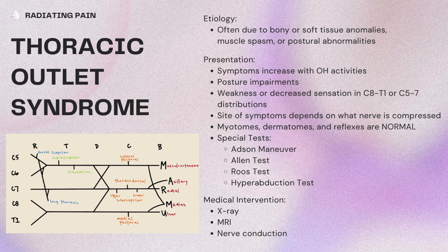Special tests are the Adson maneuver, Allen test, Roos test, and hyperabduction test. Medical intervention includes x-rays to assess for bony morphology and degenerative changes, MRI to identify soft tissue abnormalities or nerve root pathology for differential diagnosis, and nerve conduction or EMG studies to assess for nerve pathology. Thoracic outlet syndrome has three possible areas of entrapment: the costoclavicular space, due to elevated rib or depressed clavicle; the interscalene triangle, due to tightness or hypertrophy of the scalenes; and the intrapectoral space, due to tightness of the pec minor leading to entrapment of the nerve.